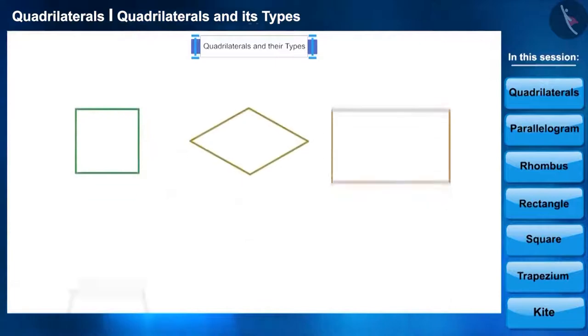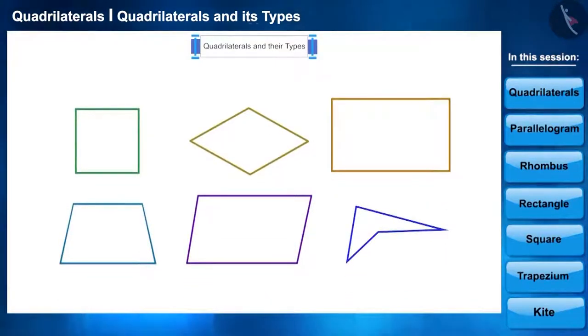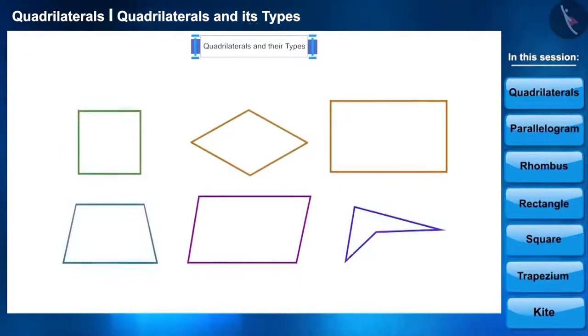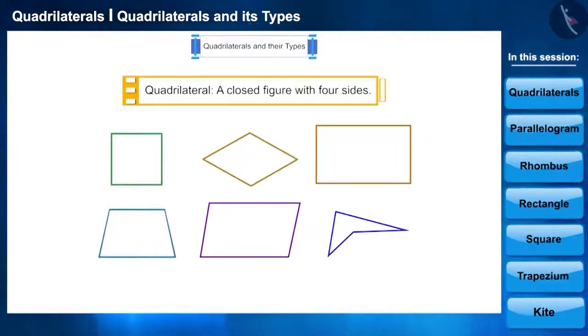Do you see any similarities between these figures? Yes, you can see that all these figures have four sides. In the previous year, we have learned that such shapes are called quadrilaterals.